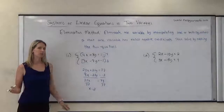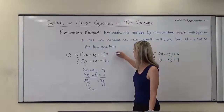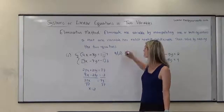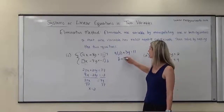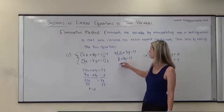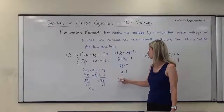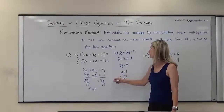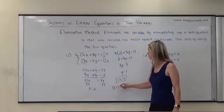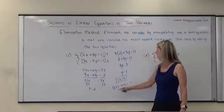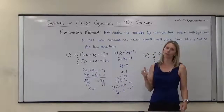I know the x-coordinate, but I still need to determine the y-coordinate. I go back to one of the original equations — I'll use the top one and replace x with 2, so we get 4 times 2 plus 3y equals 11, which is 8 plus 3y equals 11. Subtracting 8 from both sides gives 3y equals 3, so y equals 1. The solution to this system is 2, 1. Let me verify with the second equation: 3 times 2 minus 7 times 1 — does that equal negative 1? 6 minus 7 is negative 1. Yes, so 2, 1 is the solution.